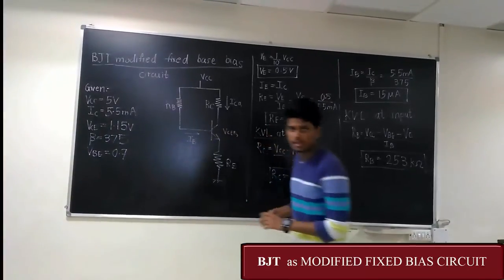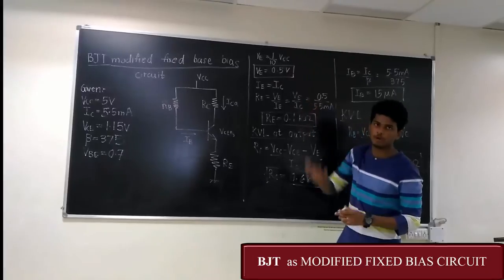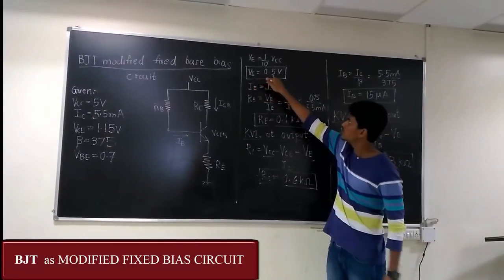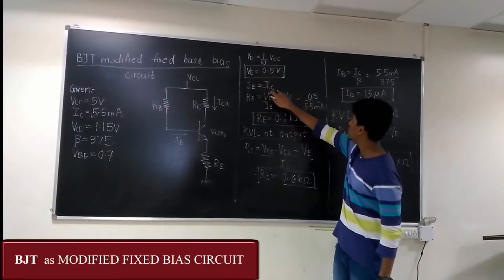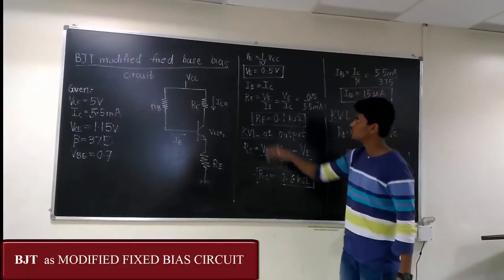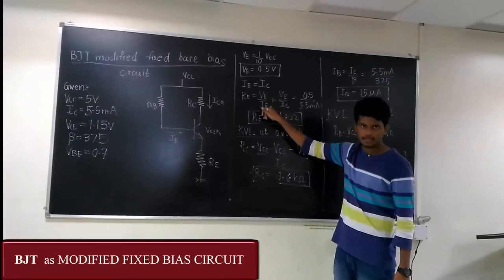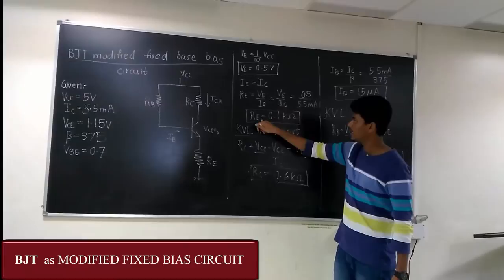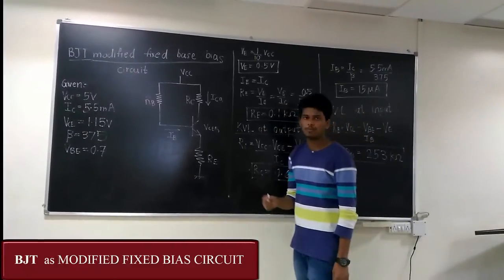Here as we know that VE is always one-tenth of VCC, approximately equal to one-tenth of VCC. So VE is equal to 0.5 volts. We know that IE is equal to IC and IB is equal to IC by beta. So RE resistance is equal to VE upon IE. That gives us RE is equal to 0.1 kilo ohm.